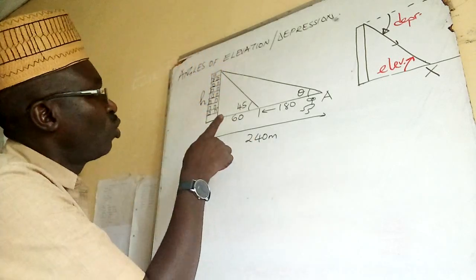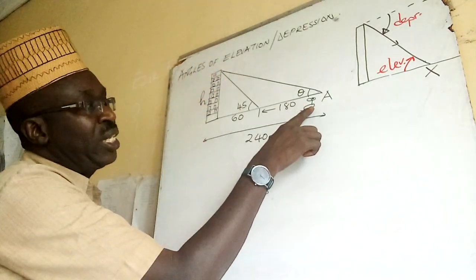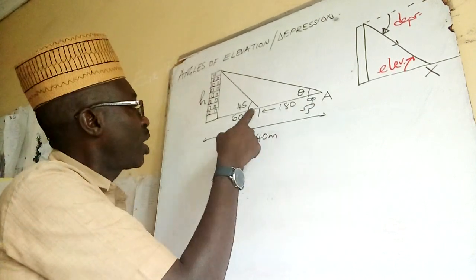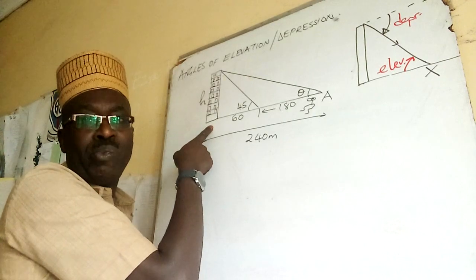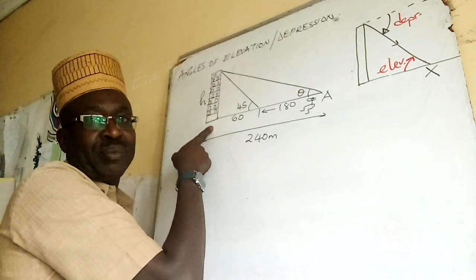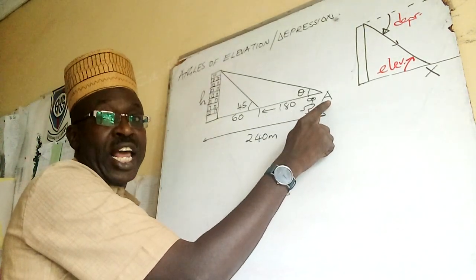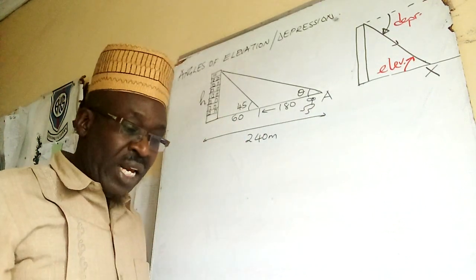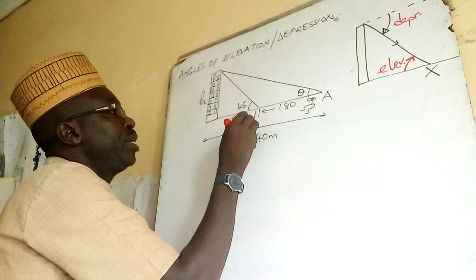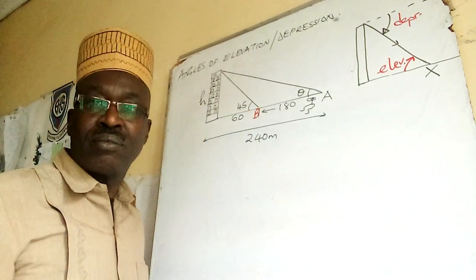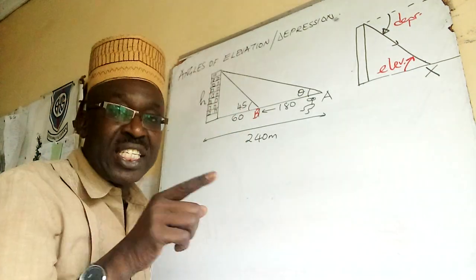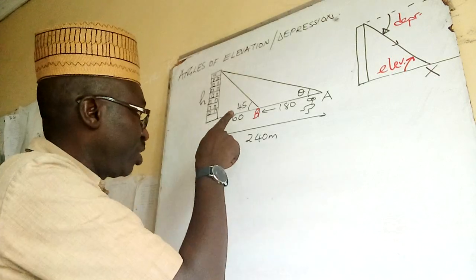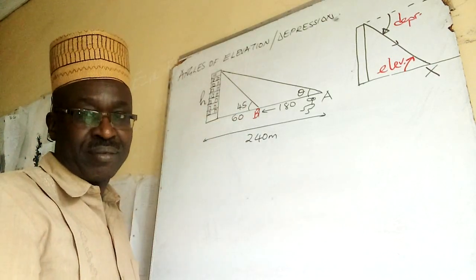Let us look at this. There is this gentleman here, this young man. This young man we are told is walking towards the foot of a tall building. From point A he goes towards the foot of a tall building, then he stops at point B.